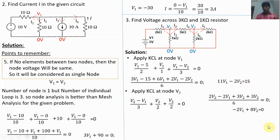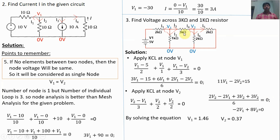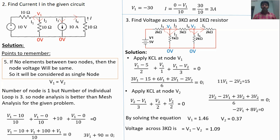Solving the two equations — equation 1: 11V1 minus 2V2 equals 15; equation 2: minus 2V1 plus 8V2 equals 0 — gives V1 equals 1.46V and V2 equals 0.37V. The voltage across the 3kΩ resistor is V1 minus V2, which equals 1.46 minus 0.37 equals 1.09V. The voltage across the 1kΩ resistor is V1 minus 0, which equals V1 equals 1.46V.